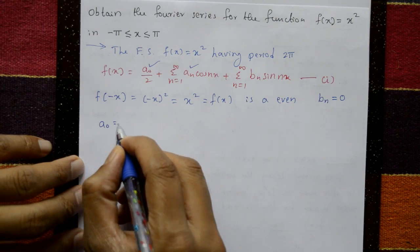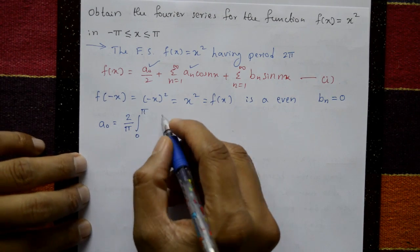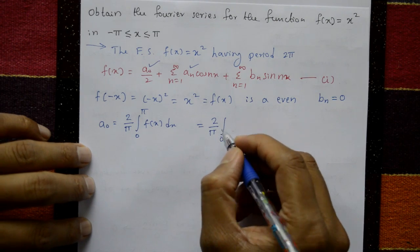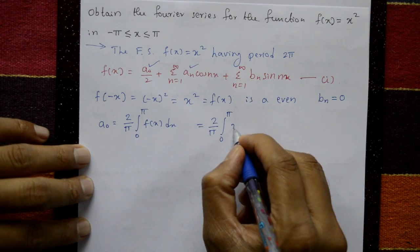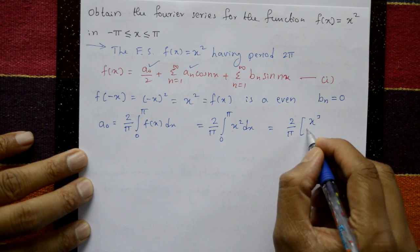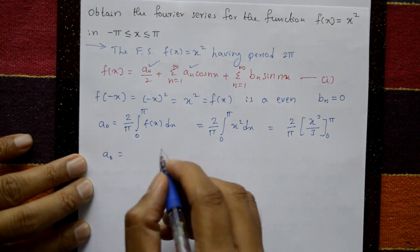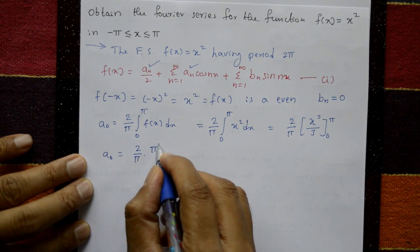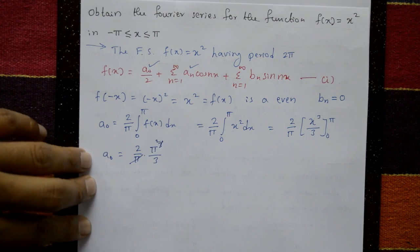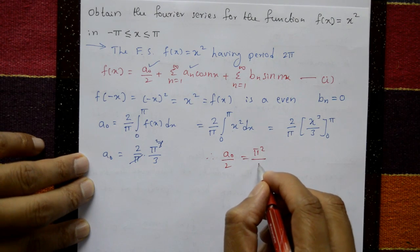For a₀: a₀ = (2/π) ∫₀^π f(x) dx = (2/π) ∫₀^π x² dx = (2/π) · [x³/3] from 0 to π = (2/π) · (π³/3). The π cancels, giving a₀ = 2π²/3, so a₀/2 = π²/3.